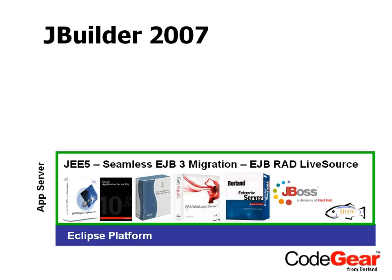We've added an EJB transform engine that allows you to seamlessly migrate between EJB2 and EJB3, and also between different application servers. So you can take an EJB developed for one app server and move it across app servers. We've done all that seamlessly, and we'll talk about it in more detail later.